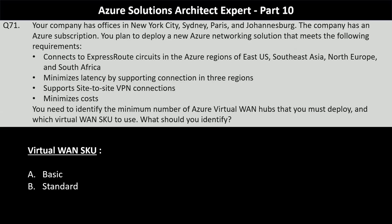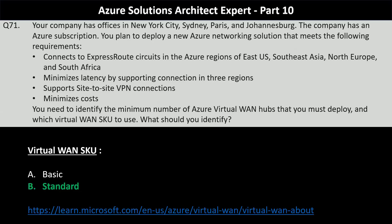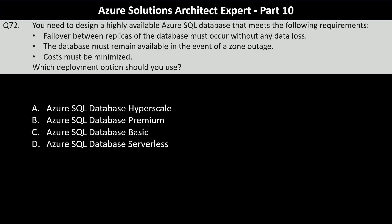For the Virtual WAN SKU, the options are Basic or Standard. The Basic SKU doesn't support ExpressRoute, so you must choose the Standard SKU. There is a link on your screen — I would highly recommend you go through it to understand more about Virtual WANs.